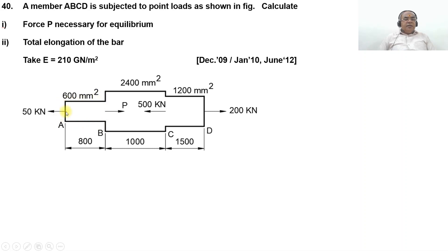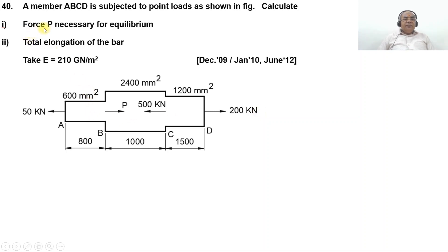In member AB, on the left-hand side you have 50 kilo Newton and P on the other side. Between the 2400 mm square member BC, you have P on the left-hand side and 500 on the right-hand side. Between the 1200 mm square member CD, you have 500 kilo Newton and 200 kilo Newton. First we need to find the force P necessary for equilibrium.